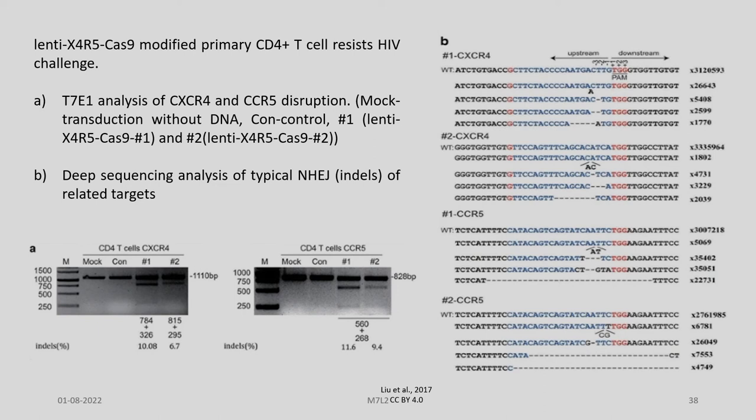In the figure you can see the gel analysis of the various experiments. The T7E1 analysis of CXCR4 and CCR5 disruption is presented, and in panel B the sequencing analysis of the typical non-homologous end joining indels at the related targets is presented.